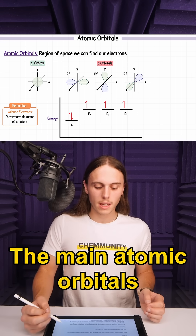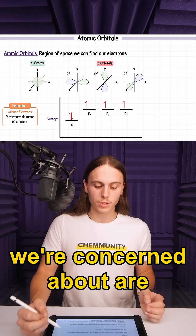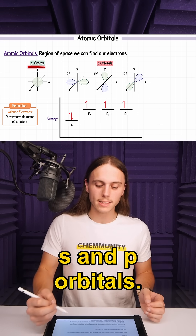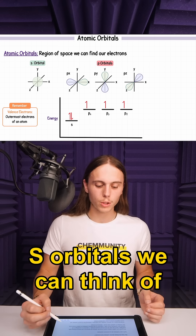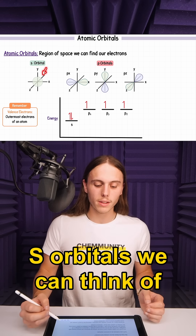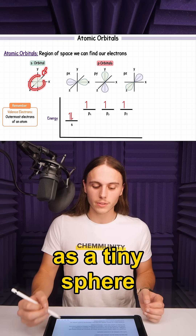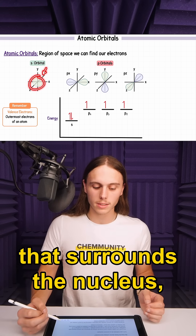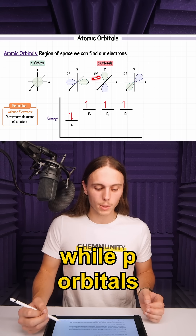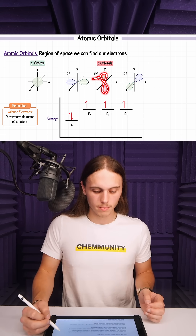The main atomic orbitals we're concerned about are S and P orbitals. S orbitals we can think of as a tiny sphere that surrounds the nucleus, while P orbitals look like dumbbells.